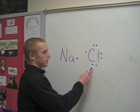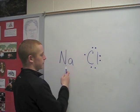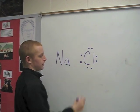Chlorine has seven valence electrons but it wants eight. So it's going to take one from sodium to make eight.